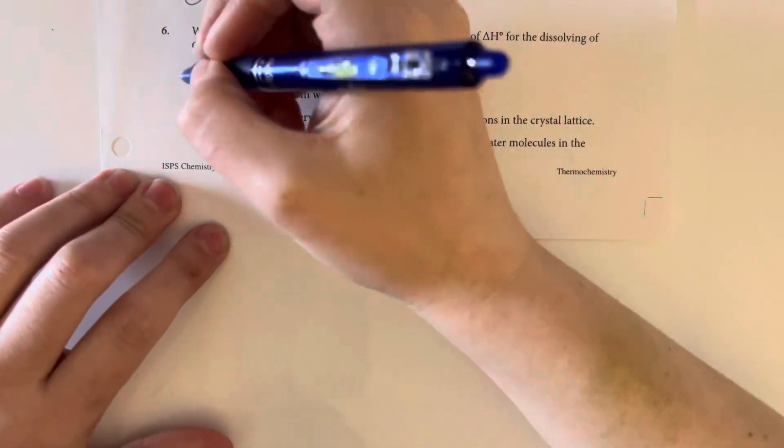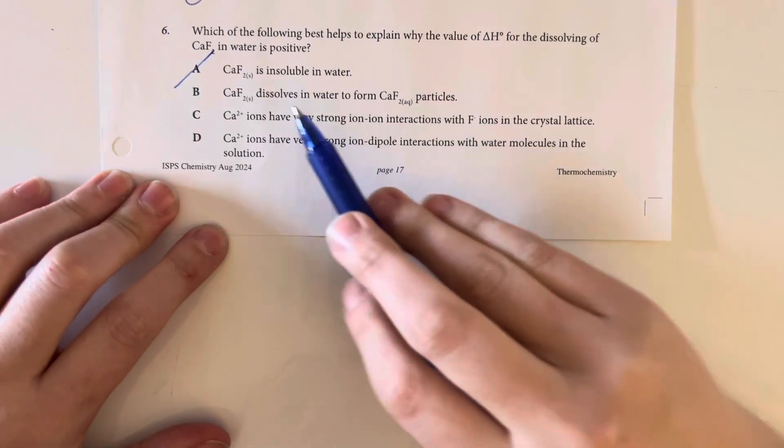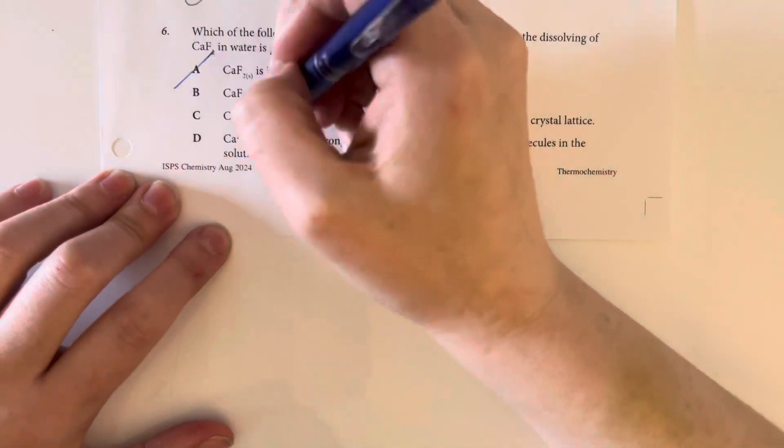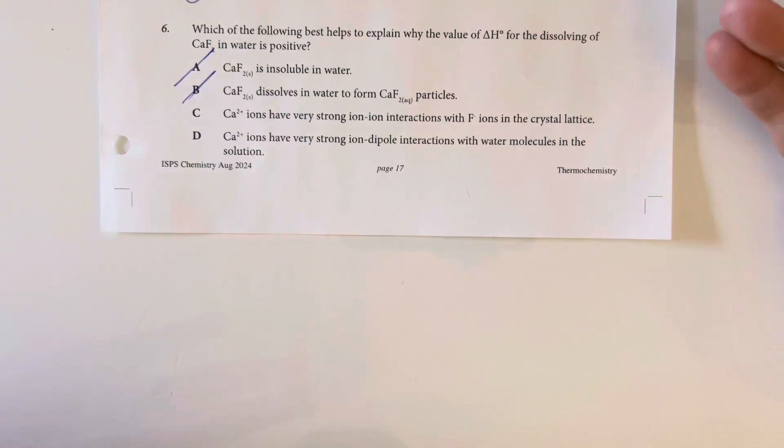Insoluble, we wouldn't be able to make this happen at all. Calcium fluoride is ionic, forming calcium fluoride particles when it dissolves is not how calcium fluoride would form. It would form a calcium ion and a fluoride ion.